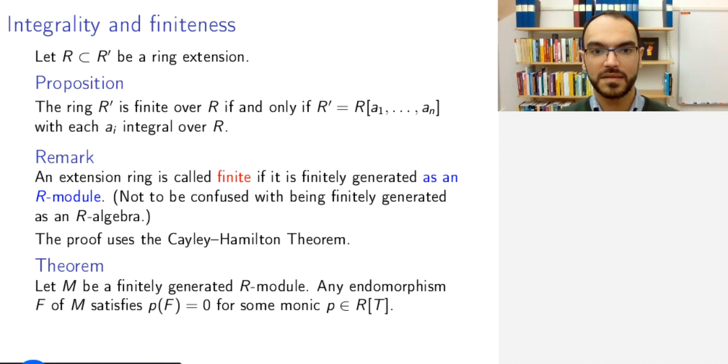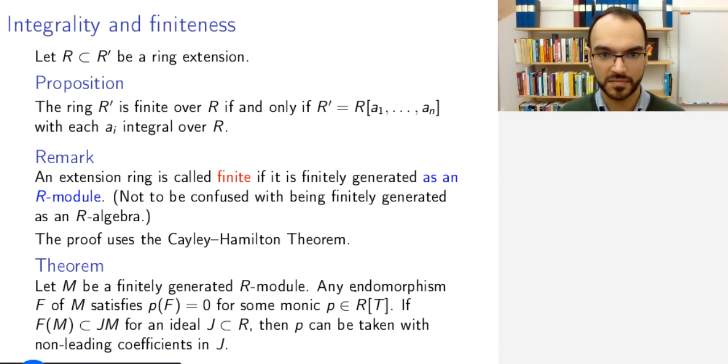To prove this, we will need the Cayley-Hamilton theorem. You might know this from linear algebra, or you might have seen it in full generality. We will use it without proof, and the theorem says the following. If you have a finitely generated R-module, so finitely generated as a module, then any endomorphism of this R-module satisfies some monic polynomial equation over R. This is what we will need for the proof of this theorem, but for later, let's record the additional part of the theorem, that if in addition you know that the image of M sits inside some ideal times M, then you can take this polynomial p to have all its non-leading coefficients in the ideal J. The leading coefficient is 1 because the polynomial is monic.